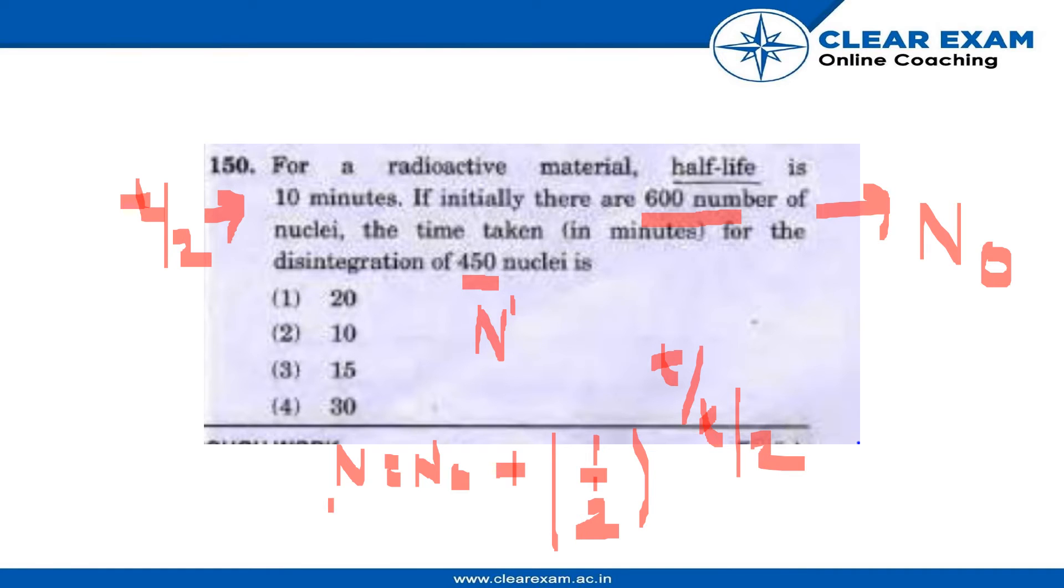In order to find the value of this, the formula is N equals N₀ minus N', where N' is the disintegrated amount. So N equals 600 minus 450, which gives us 150. Therefore, N equals 150 nuclei remaining.